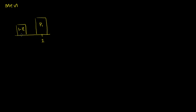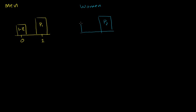So 1 minus P1 will not vote for the candidate. And then for the women, you're going to see something similar. Some proportion will vote for the candidate — we don't know if it's the same as P1, so we'll call it P2. And then the rest of the women will not vote for the candidate: 1 minus P2. So the not-voting are 0's, the ones that are voting are 1's, and these are both Bernoulli distributions.